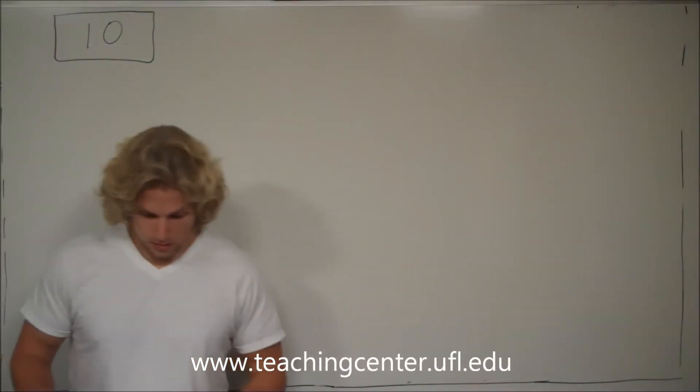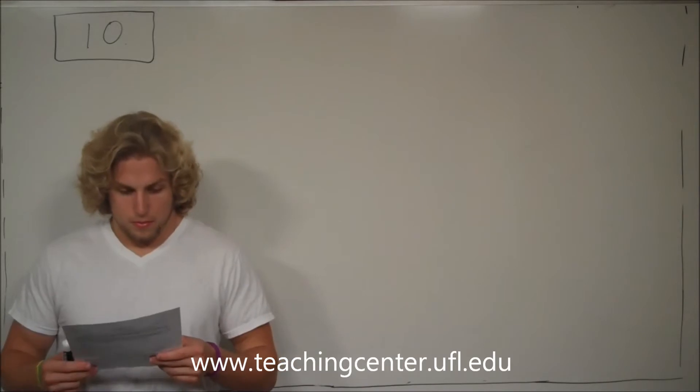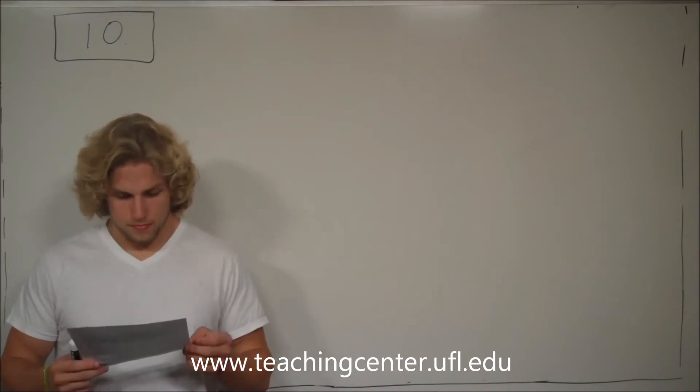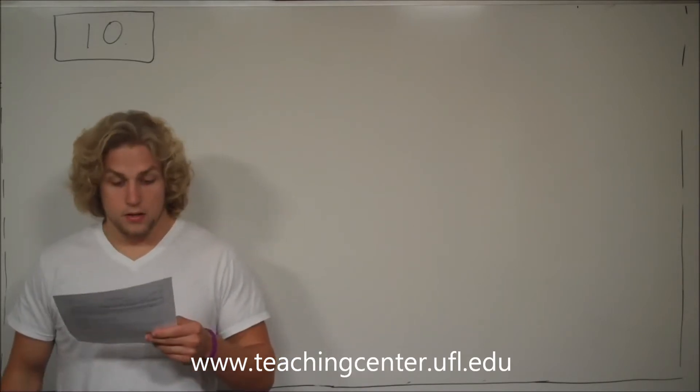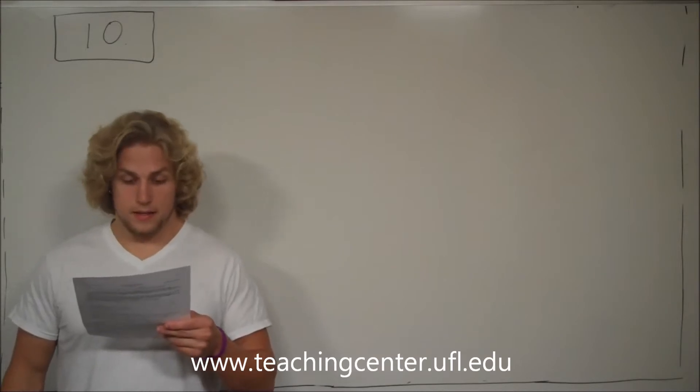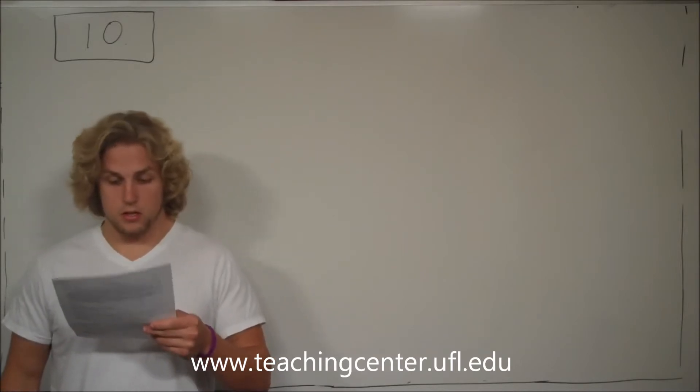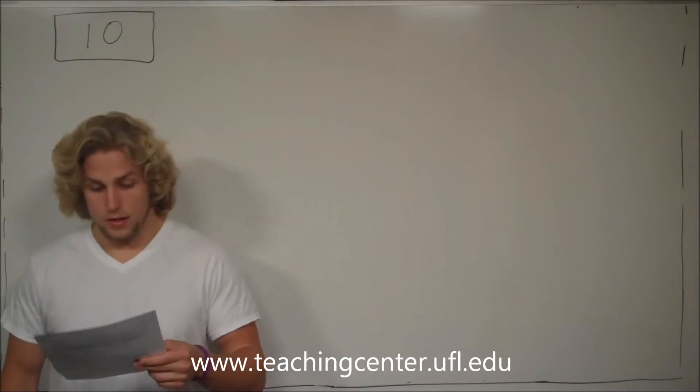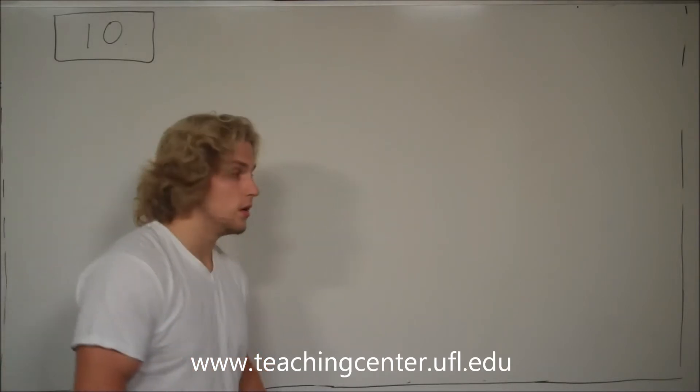This is problem 10. It says, a dart is thrown horizontally towards x at 20 meters as shown. It hits y 0.1 seconds later. The distance x-y is, and has a drawing to go along with it.